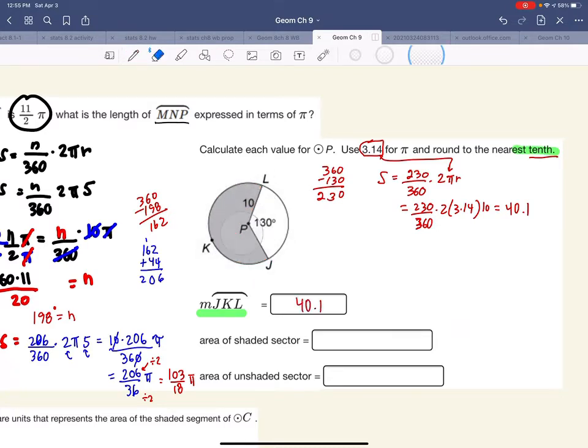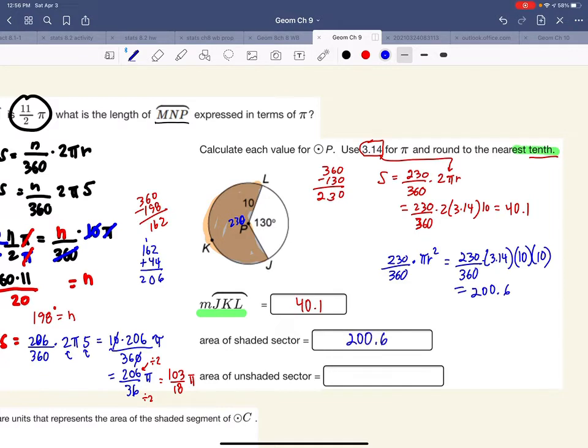Now they ask, what's the area of the shaded region? So this is saying, what's this? Well, I just need to find out what portion of the whole thing it is. So since this angle is 230 degrees, 230 over 360 times the portion of my area and area is pi r squared. And they said for pi, go ahead and plug in 3.14. And my radius is 10. So radius squared would be 10 times 10. So 230 divided by 360 equals times 3.14 equals times 10 equals times 10 equals. I get 200.6.